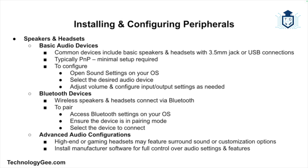Basic speakers and headsets that connect via a 3.5mm jack or USB are usually plug-and-play. To configure the audio output, go to the sound settings on your operating system, select the device, adjust the volume, and configure the input/output settings. Bluetooth speakers and headsets need to be paired — go to the Bluetooth settings, ensure the device is in pairing mode, and connect it. For advanced headsets with surround sound or gaming features, installing the manufacturer's software is recommended for full access to customization settings.